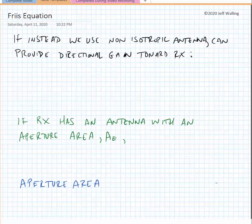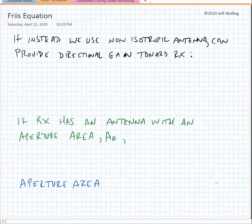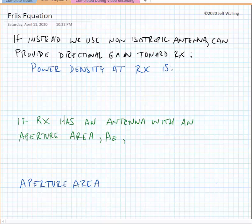If we use a non-isotropic antenna, it can provide a directional gain towards the receiver. Almost all antennas are non-isotropic — an isotropic antenna would be something like a point charge in space, which we can't realize physically. If we use a non-isotropic antenna, all we need to do is modify the power density at the receiver by the gain of the transmitting antenna.